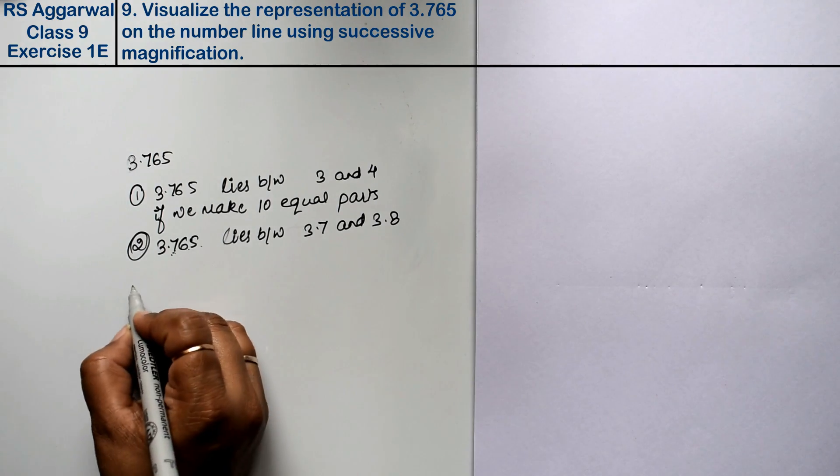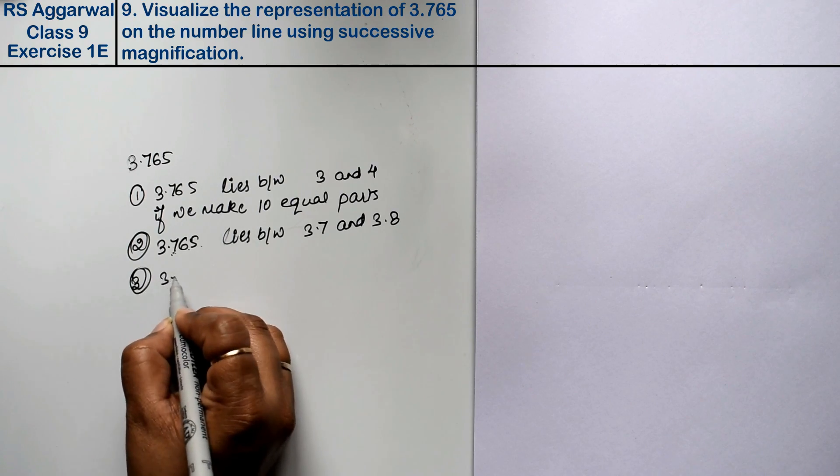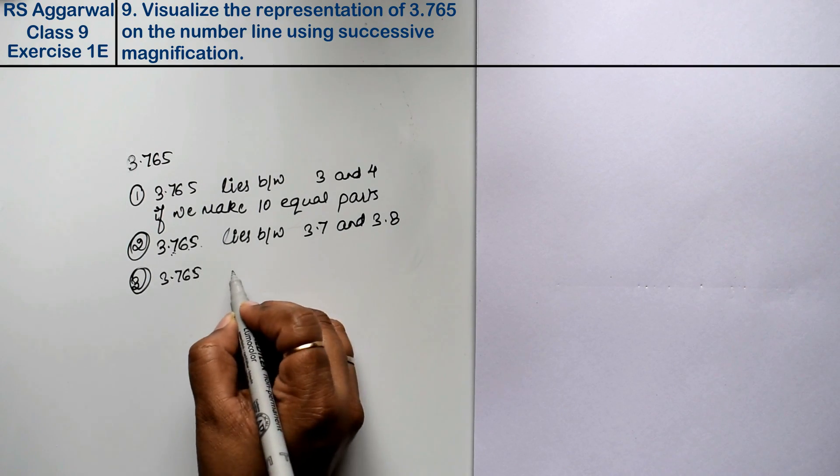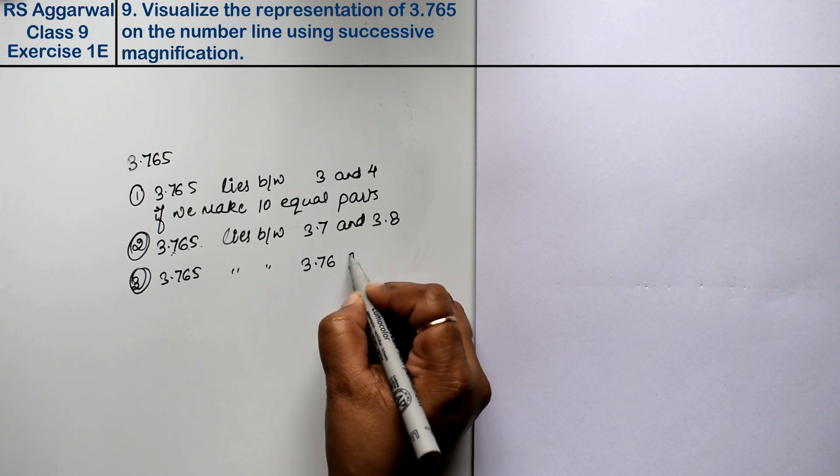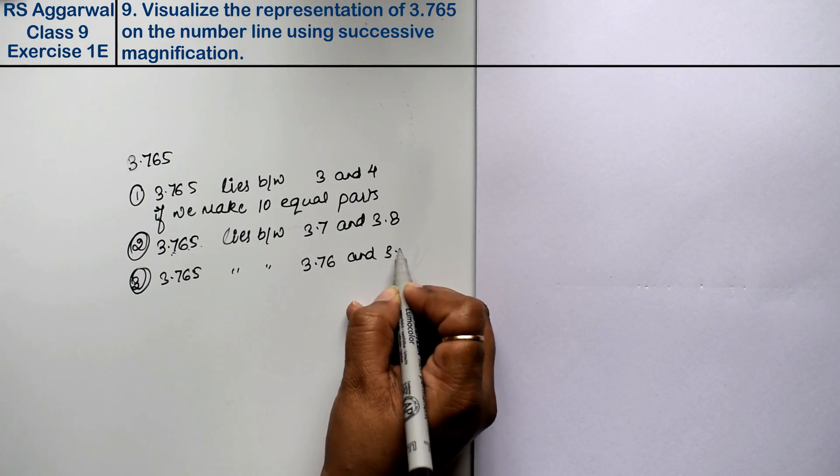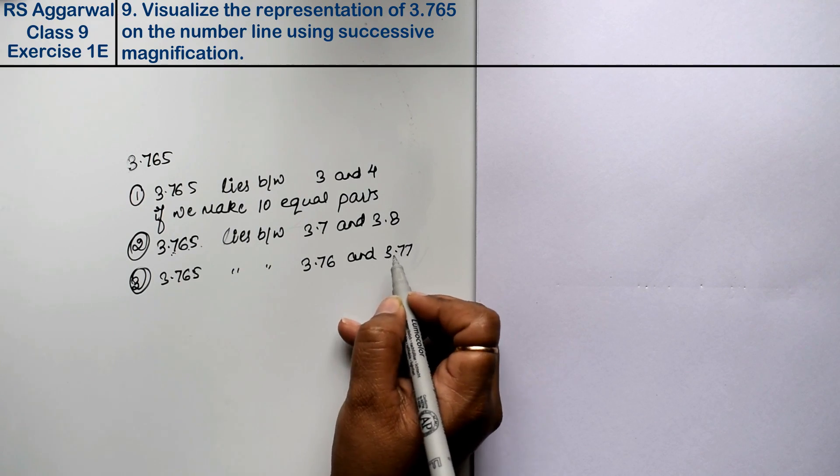Now, if we look at the third part, we will find that 3.765 lies between 3.76 and 3.77. Let's see how.